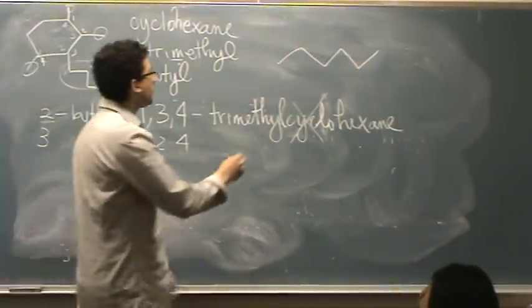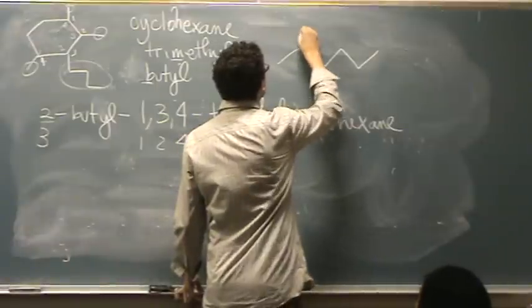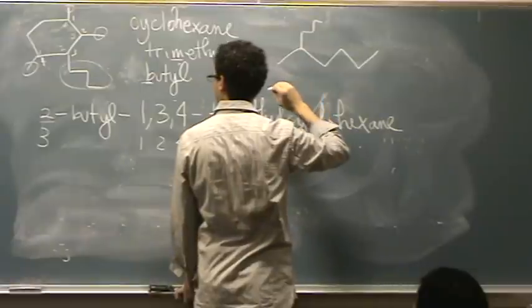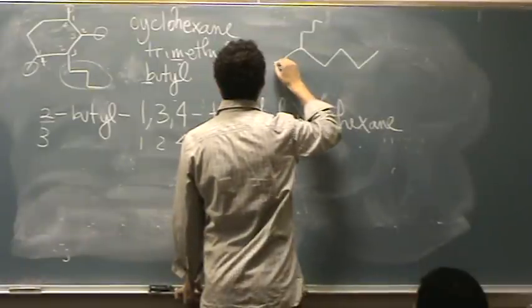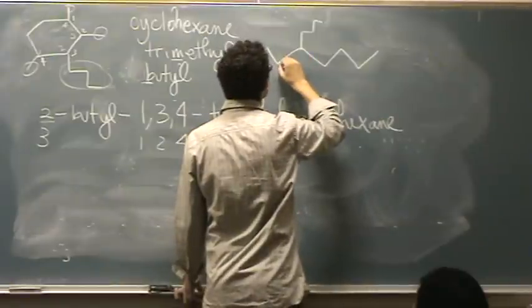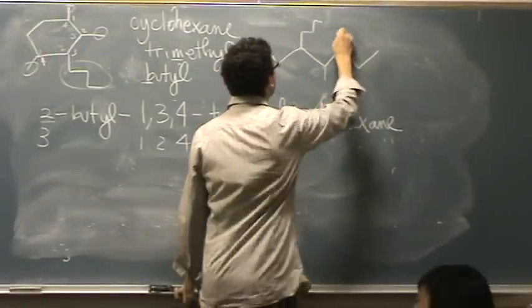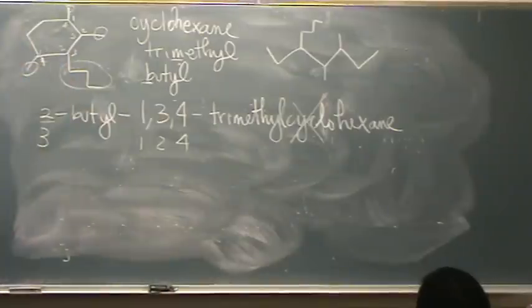On the second one would be a butyl. And then on 1, 3, and 4, it would look something like that. So not only did you forget the cyclo, you obviously had to have named it wrong.